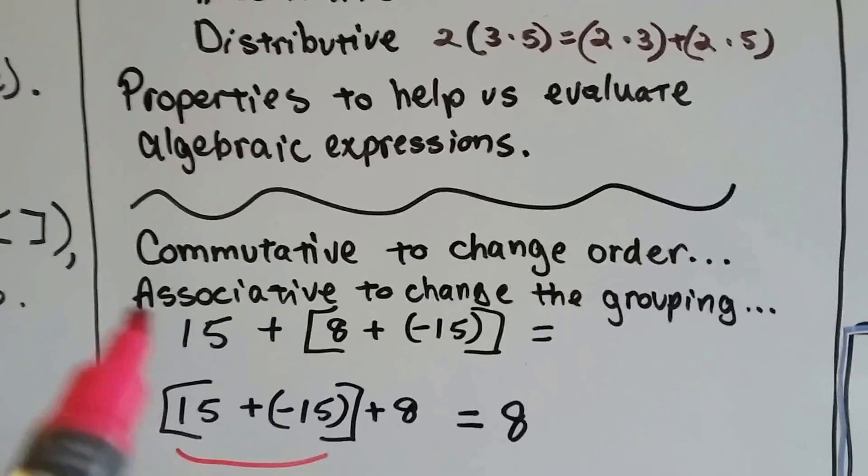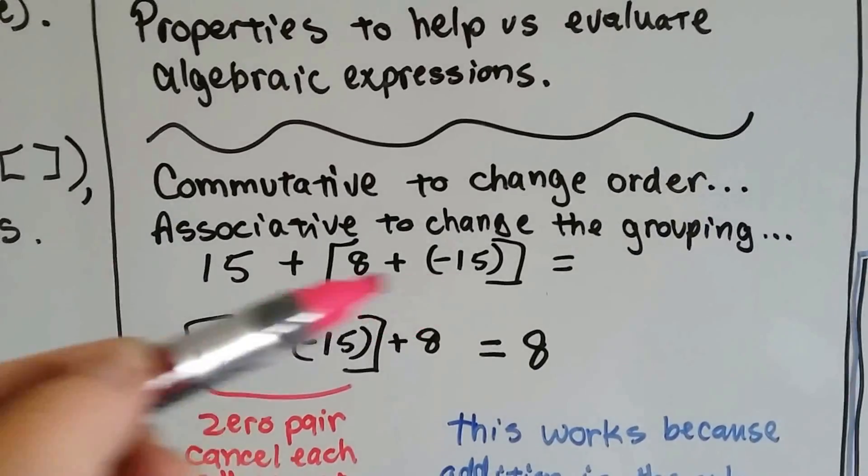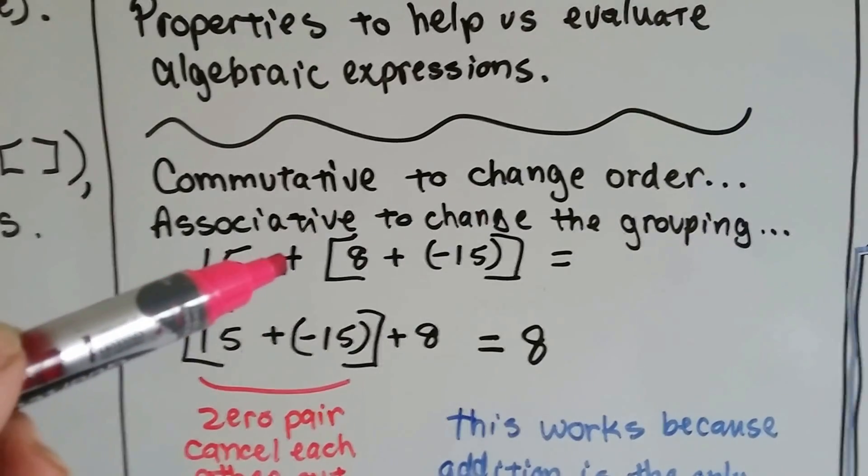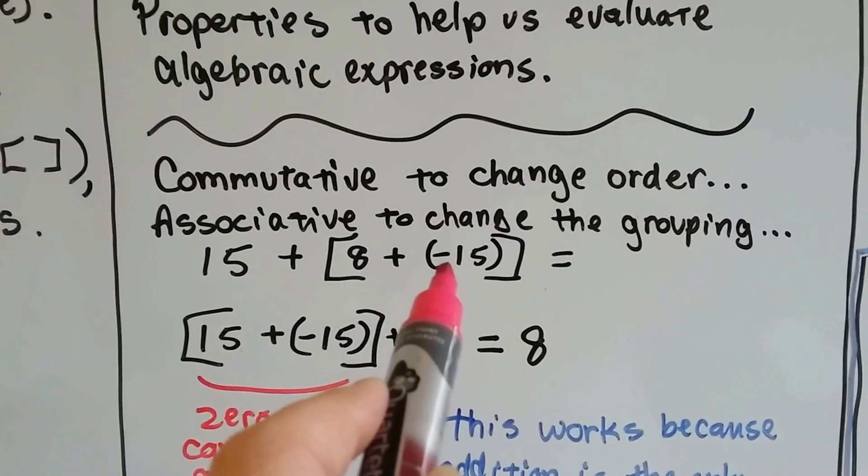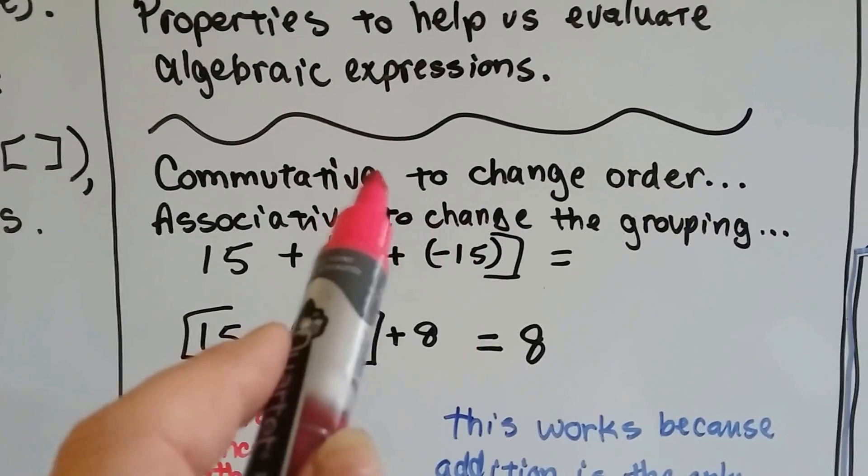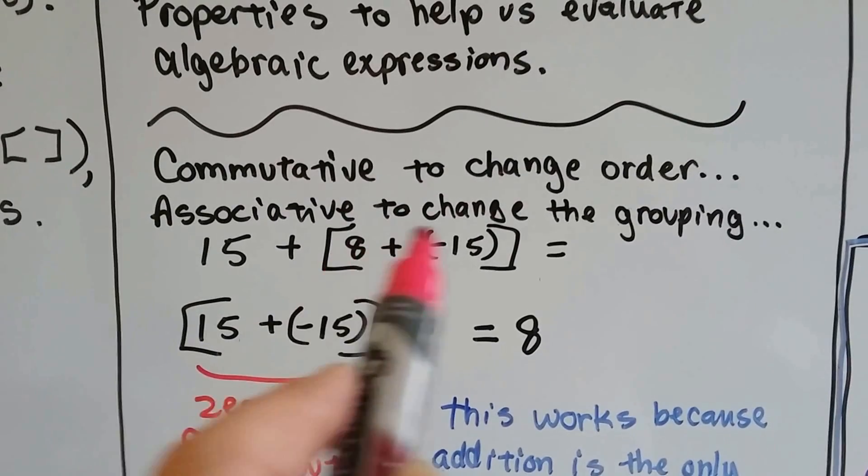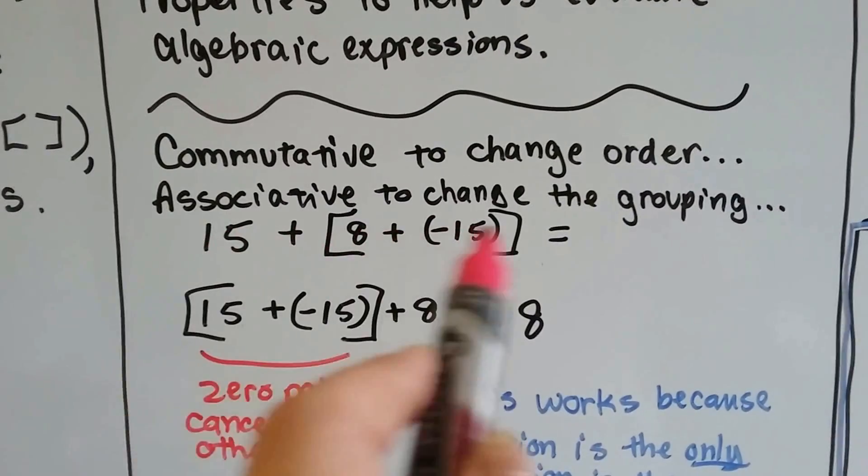Alright, so here's the commutative. We use the commutative property to change the order of the numbers. We've got 15 plus, and then we've got inside brackets, 8 plus a negative 15. So we have to do inside the brackets first normally. But we can use the commutative property to change the order of these. We could put the 15 over here and the 8 over here because it's all addition.